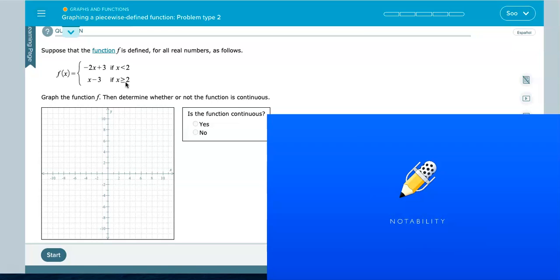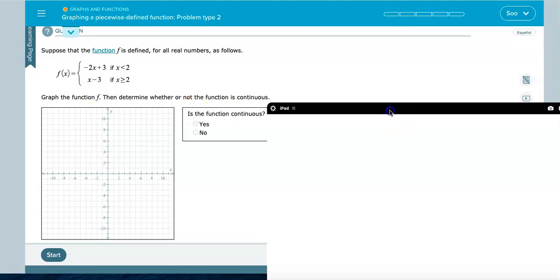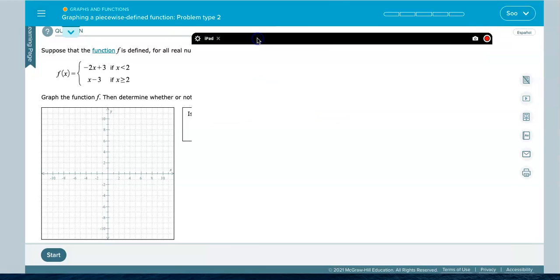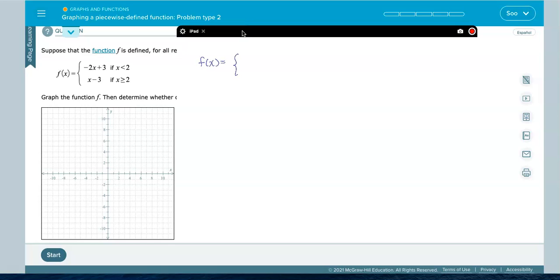I can never graph these without doing some work. I'm going to go ahead and connect my notepad over here so that I can do the work here. So I always do it in two steps. Let me copy this: f of x equals two functions, negative 2x plus 3 if x is less than 2, and x minus 3 if x is greater than or equal to 2.